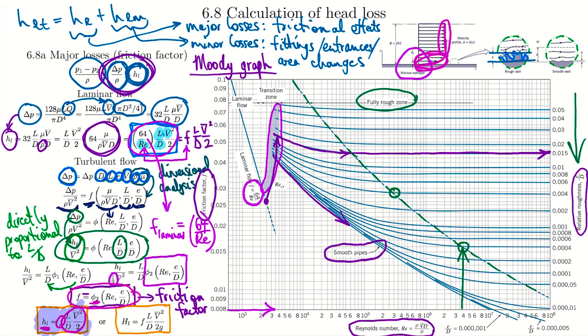You should have notes summarizing: as Reynolds increases, the viscous sublayer shrinks. This is the kind of understanding you need to walk through these problems and explain the graph. In solving problems, make sure you know how to use this graph — calculate Reynolds number, calculate relative roughness, go on the curve and figure out your friction factor. When looking up roughness, you typically get a table like this listing different pipe types with their roughness when brand new.